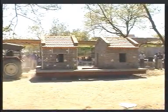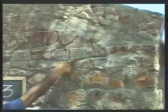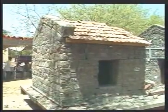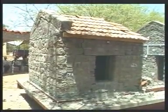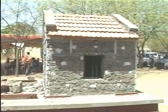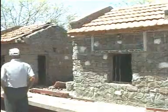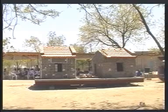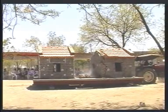Upon subjecting the models to shocks using a tractor, the traditionally built model began to develop horizontal cracks in the north and south walls and diagonal cracks starting from window corners in the east and west walls. In the quake-resistant model, because of the band, such cracks did not occur. By the 10th shock, the northwest corner crack in the traditional house reached grade 4 level, with the west wall in a state of impending collapse.